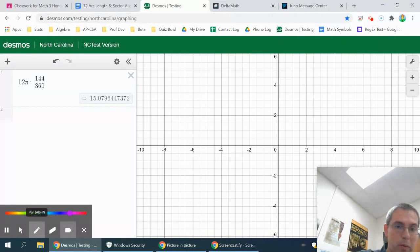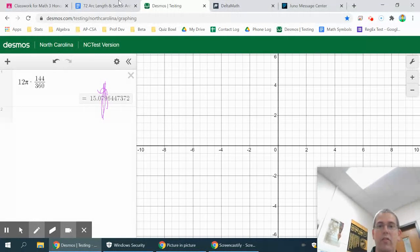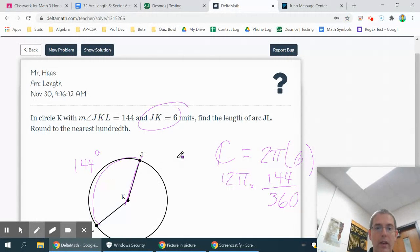So this one said to the nearest hundredth. Hundred has two zeros, so remember that's two decimal places. So that's 15.07, and the 9 makes it round up, so that's 15.08. So your answer there should be 15.08. Hopefully that will help you know how to do an arc length. We'll go ahead and do a sector area.